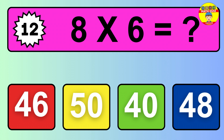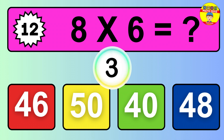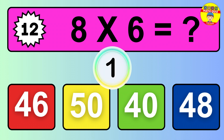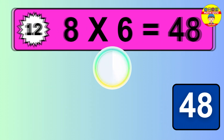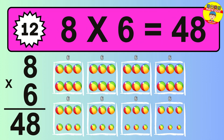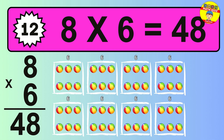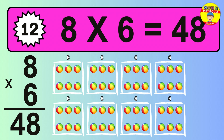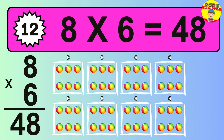Question 12. 8 times 6 equals what? The answer is 8 times 6 is 48. To calculate, we have 8 groups with 6 balls each one. So how many balls do we have? 48 balls.